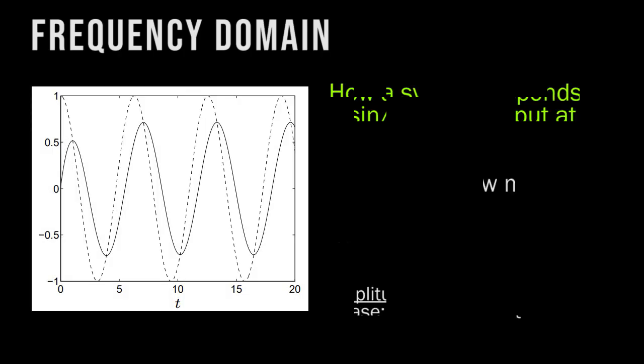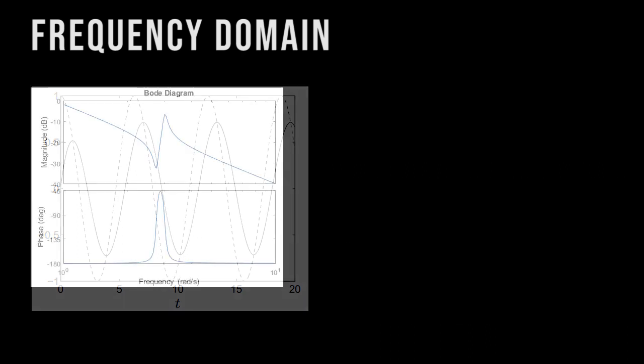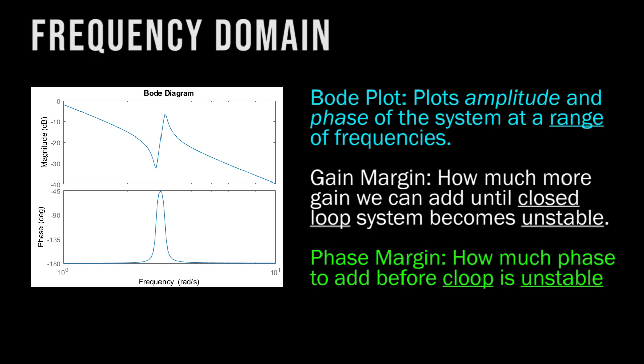We can use the frequency domain — it is simply how quickly a system responds to a sine or cosine wave at a specified frequency. Waves also have an amplitude and a phase, which means how much it has shifted left or right. The Bode plot plots the amplitude and phase response of a system at many frequencies. The gain margin is how much more gain we can add until the closed loop system becomes unstable. The phase margin is how much phase you can add before instability — the more phase margin you have, the less overshoot you will have.